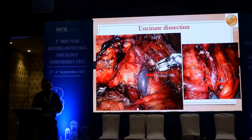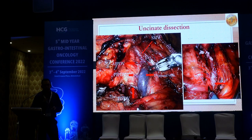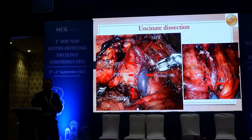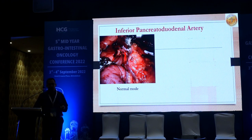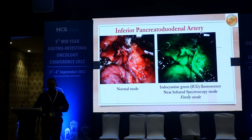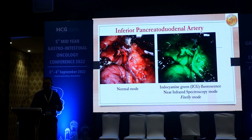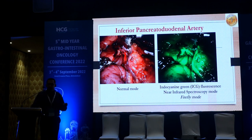This picture shows the posterior inferior PD vein draining into the first jejunal vein, and the anterior inferior PD vein directly draining into the SMV. You have to divide these sequentially to get a good resection. For the inferior PD artery, if you have any doubt you can use ICG mode to see whether it is coming from the SMA and clip it, so that you don't encounter bleeding in the post-operative period.